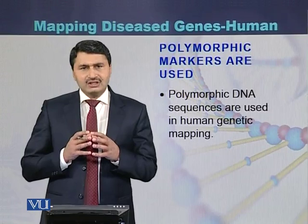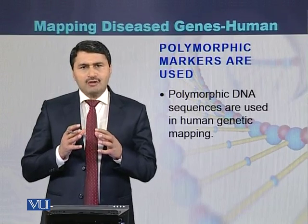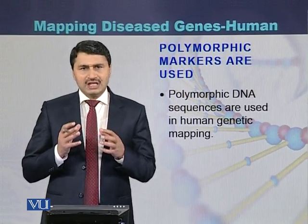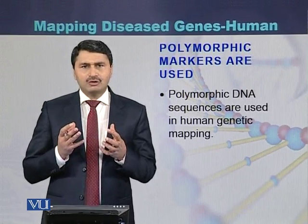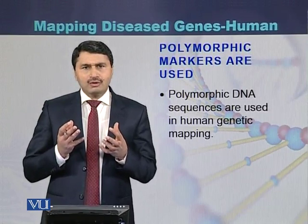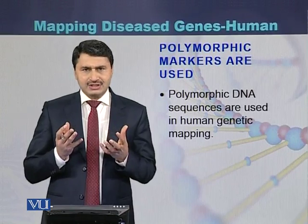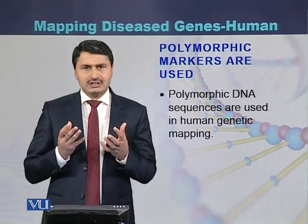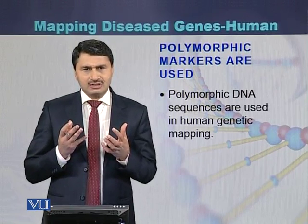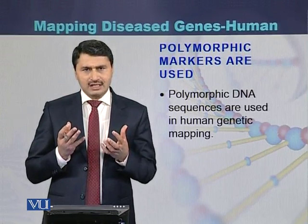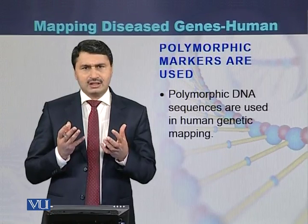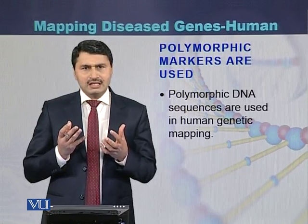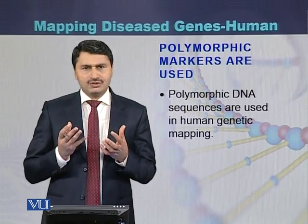For the identification of disease genes, polymorphic markers are used. There are different types of polymorphic markers. The common polymorphic markers are STR (short tandem repeat) markers and SNP (single nucleotide polymorphism). Researchers or geneticists may use either STR markers or single nucleotide polymorphisms as polymorphic markers.